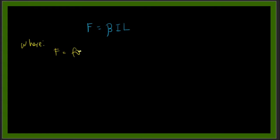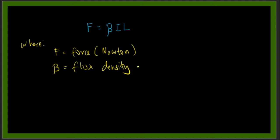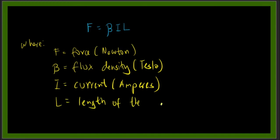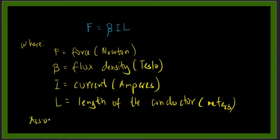F is the force — in the SI system the unit is Newton. Beta is the flux density, and its unit is Tesla. I is the current, with the unit Amperes. And L is the length of the conductor, with the unit meters.